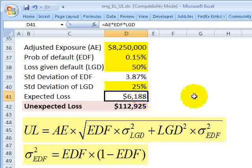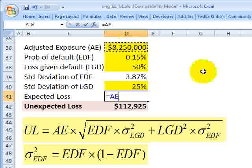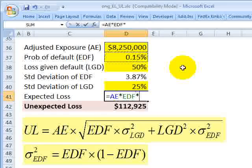I'm showing the expected loss, although we don't need it for the unexpected loss, just for some perspective. And you may know that the expected loss is the product of three components: the adjusted exposure, the probability of default, and the loss given default.